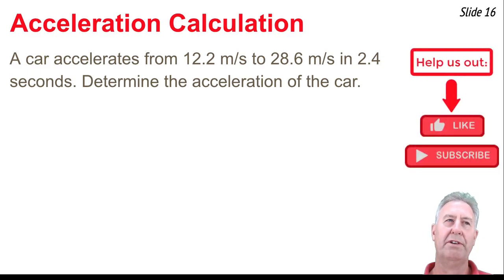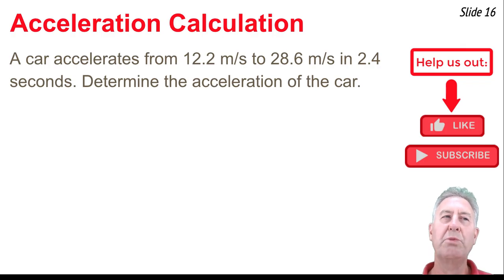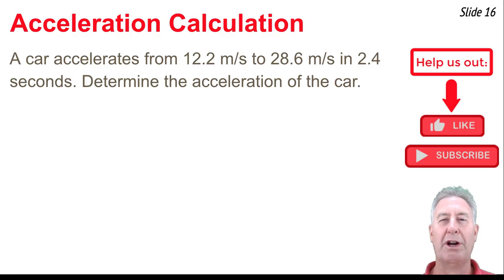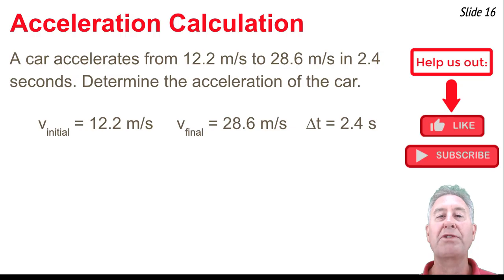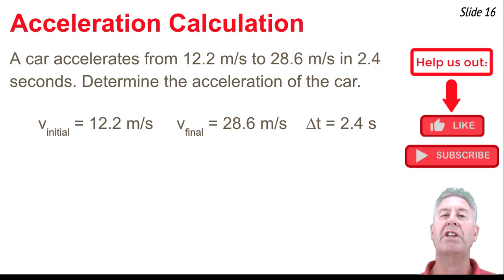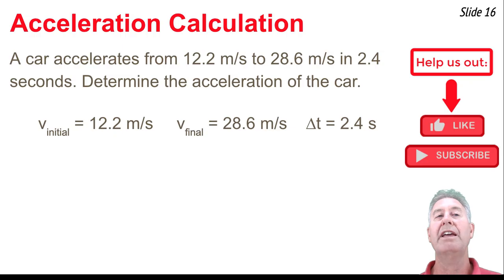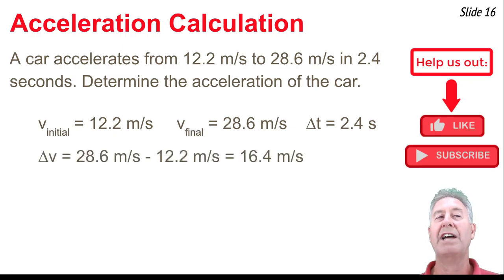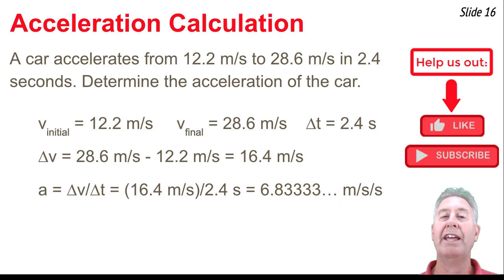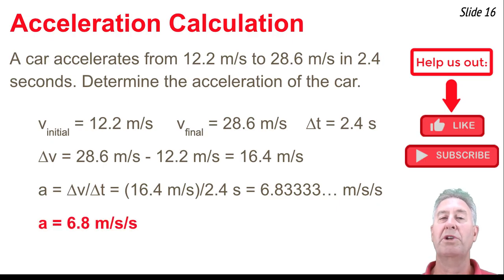Here's a calculation problem. A car accelerates from 12.2 meters per second to 28.6 meters per second in 2.4 seconds. Writing down the known values — initial velocity, final velocity, and delta t — the velocity change is 28.6 minus 12.2. Dividing that velocity change by the time change gives an acceleration of approximately 6.8 meters per second per second.